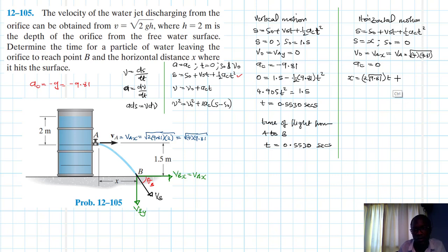Therefore this becomes x equal to va, which is just 2 root of 9.81 times t, which we found already. Let me just mention that t here is equal to 0.553, so here is 0.553, our t.